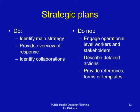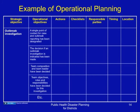This is an example of a matrix for operational planning. As you can see, it shows the strategic objective, the operational objectives within that strategy, the actions, the checklists if necessary, the responsible parties, the timing with respect to the disaster, and the location with respect to the disaster.